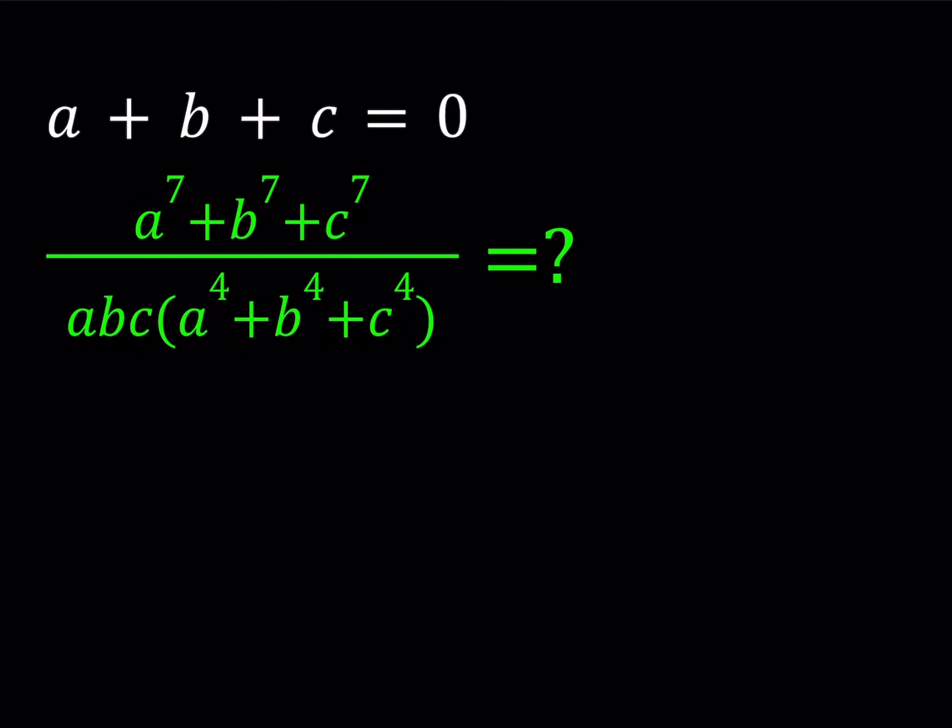Hello everyone. In this video we're going to be simplifying an algebraic expression. We're given that a plus b plus c is equal to 0, and obviously you don't want any of these numbers to be 0 because it's going to make the denominator 0 and the fraction will be undefined. So we are supposed to simplify a to the 7th plus b to the 7th plus c to the 7th divided by abc times the quantity a to the 4th plus b to the 4th plus c to the 4th. Let's get started.